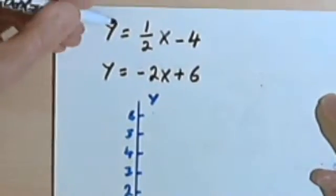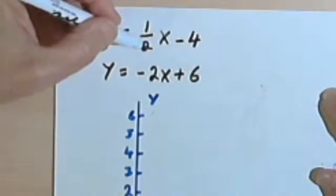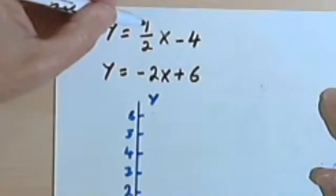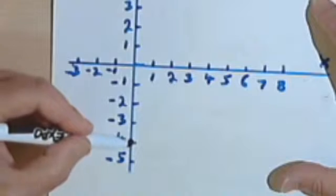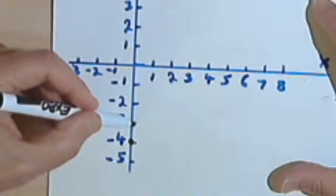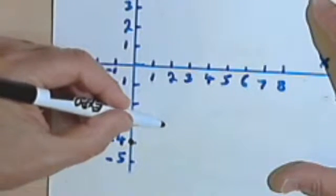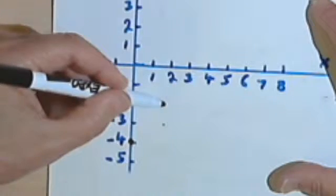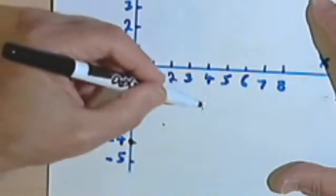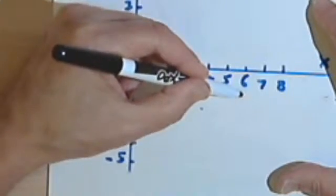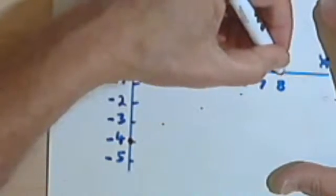And then looking at the slope, that'll be 1/2, so we're going to go up 1 and over 2. So going back down to that negative 4, I go up 1 and over 2, up 1 again and over 2, up 1 again and over 2. And so what I want to do is take all these dots and connect them with a straight edge.